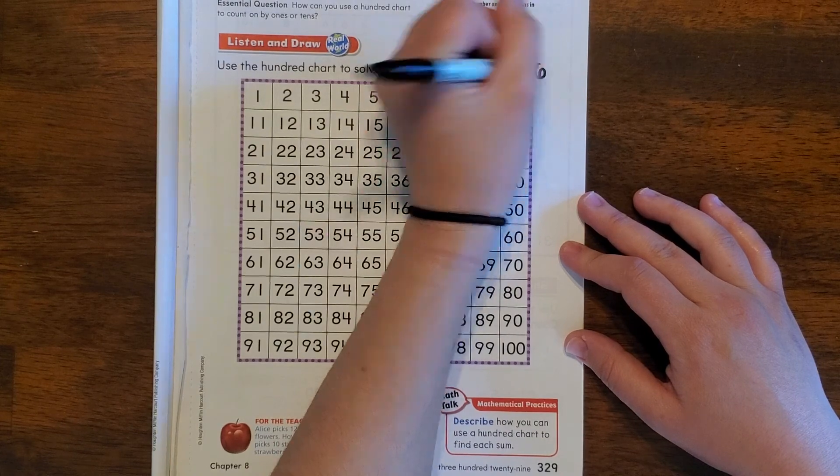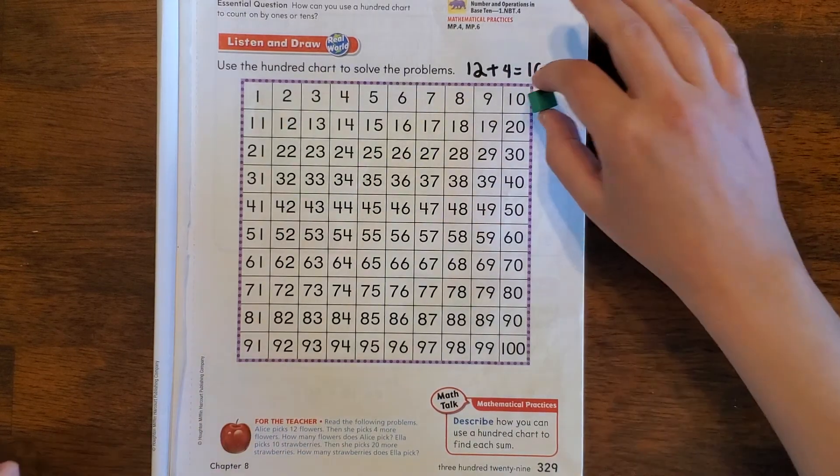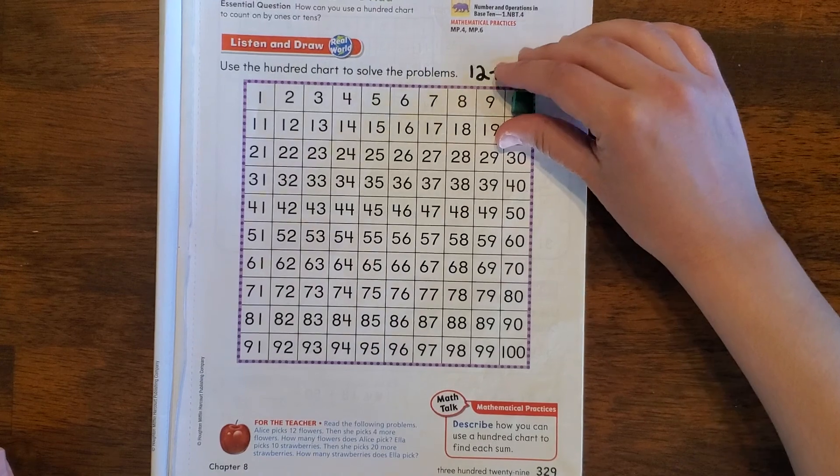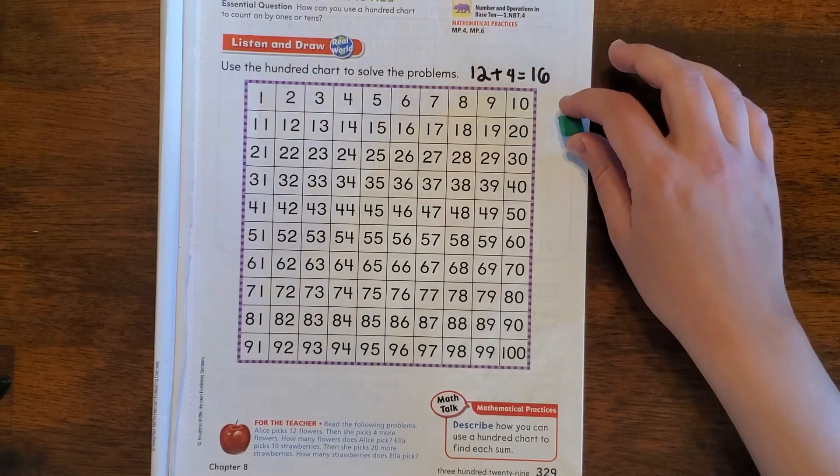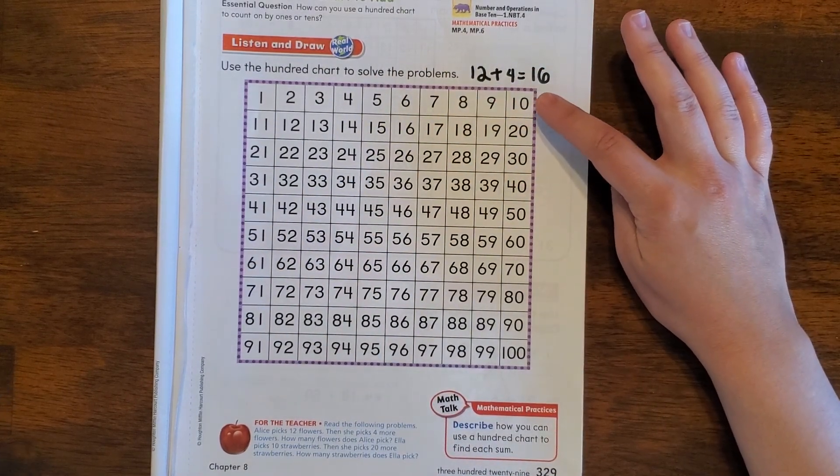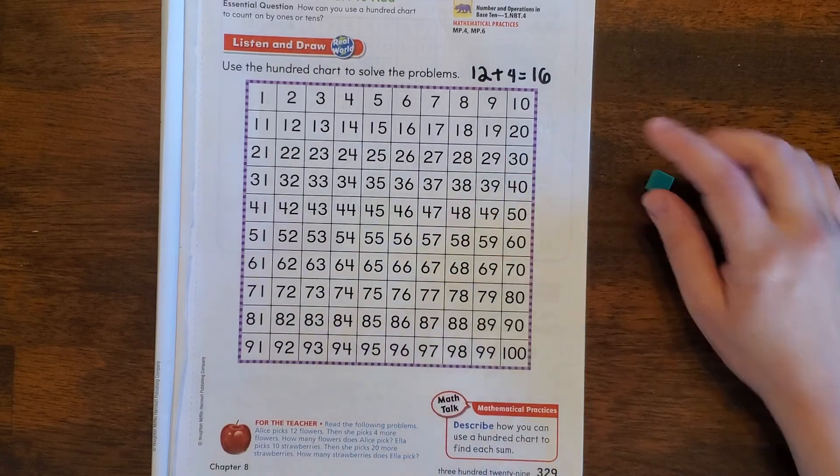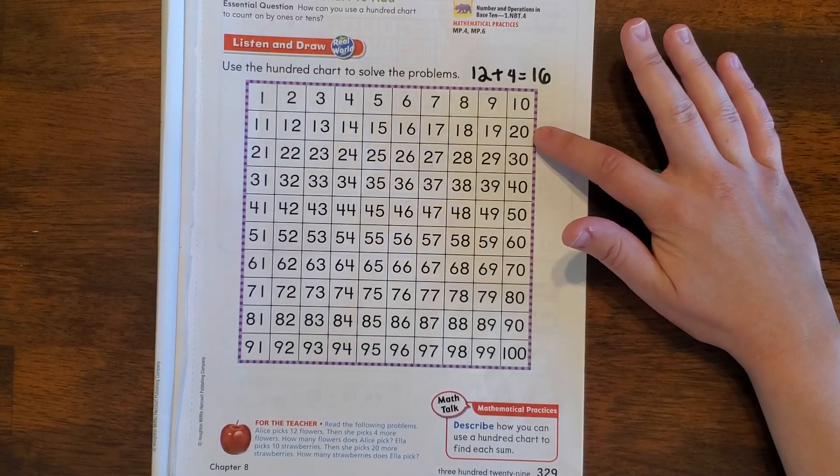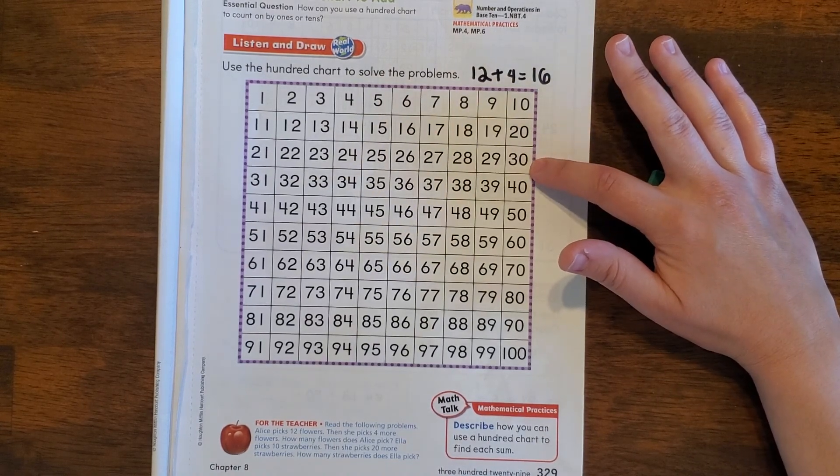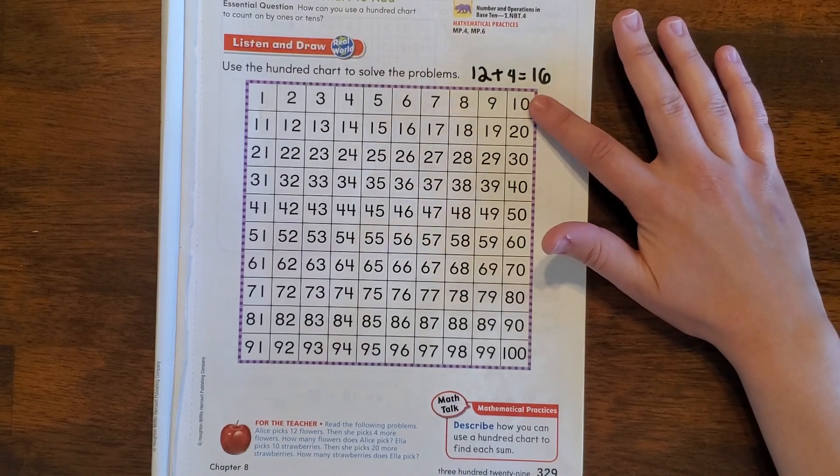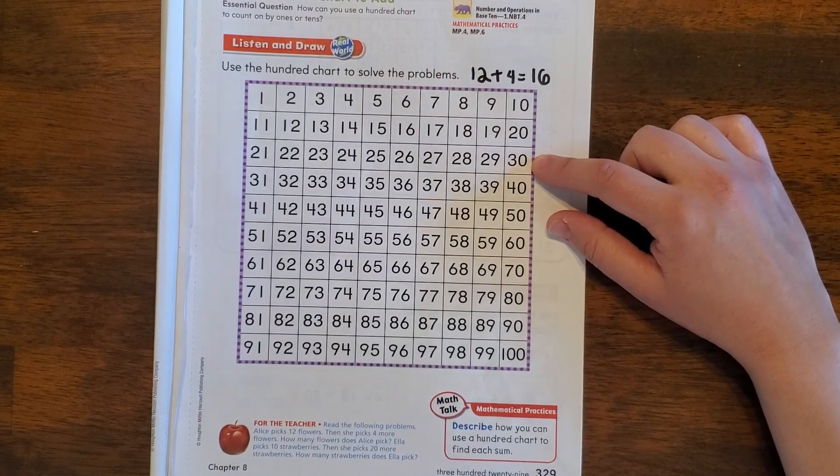All right, so let's try with Ella. Ella is going to pick 10 strawberries, so we'll start here at 10, and then she's going to pick 20 more strawberries. There are a couple of ways that we can find out 20 more than 10. We could count by ones until we count up 20, or we know that if we go down one box on the number chart it's plus 10. So if we go down two boxes, that's like plus 20. If we start at 10 and add 20 more, 10, 20, where do we end up? We end up at 30.